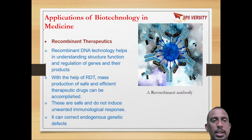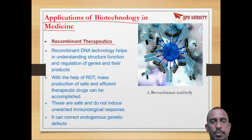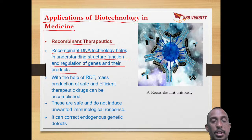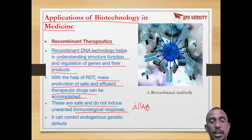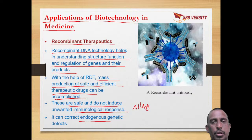Next we discuss applications of biotechnology in medicine. Recombinant therapeutics and recombinant DNA technology help in understanding the structure, function, and regulation of genes and their products. With recombinant DNA technology, large-scale production of therapeutic drugs can be done. They are safe and do not cause unwanted immunological responses. Genetic defects can also be corrected endogenously.